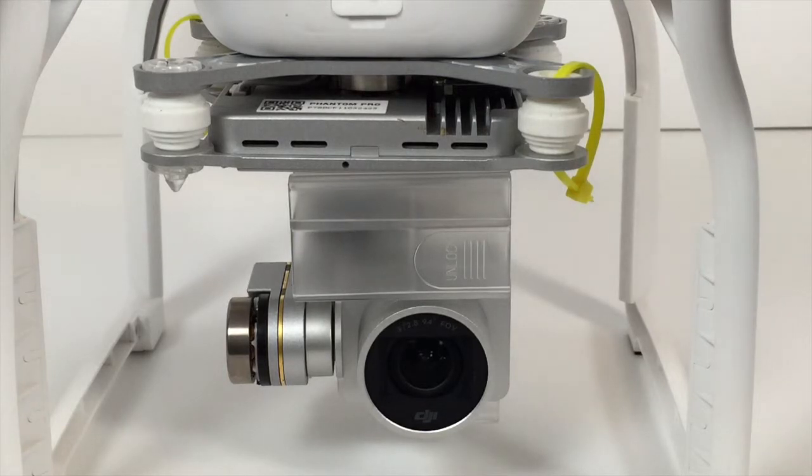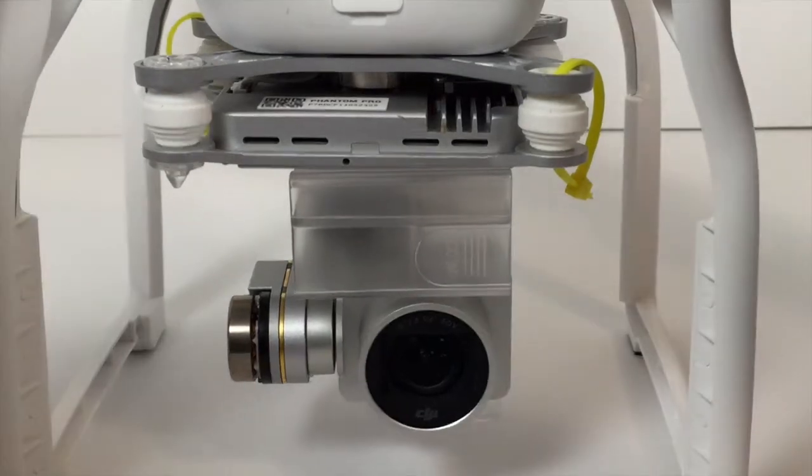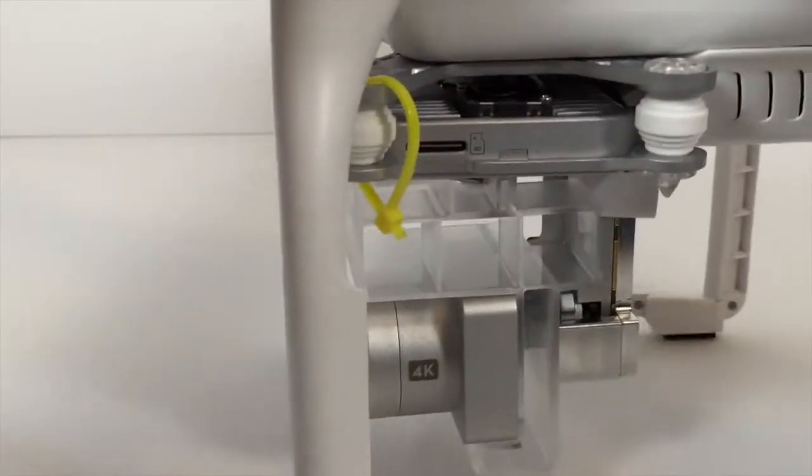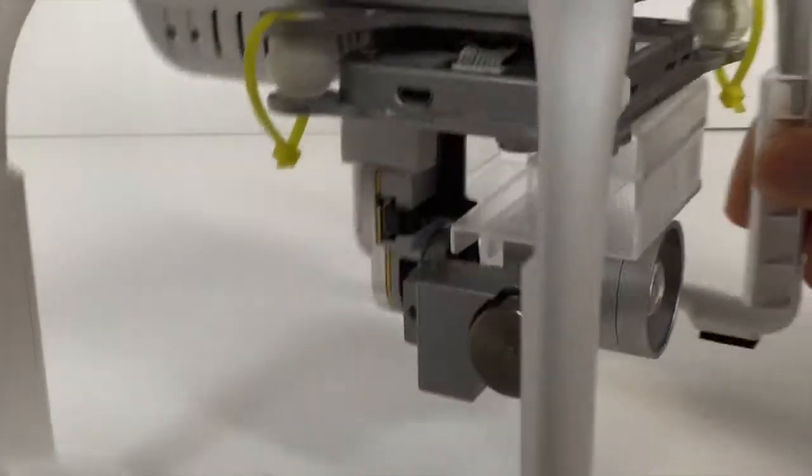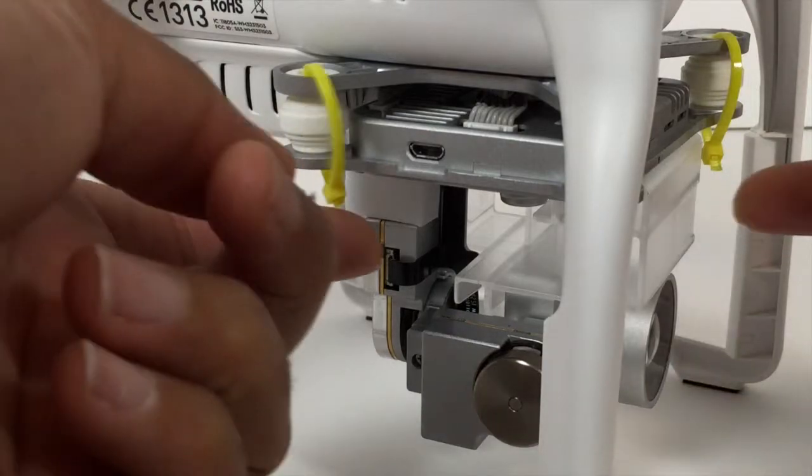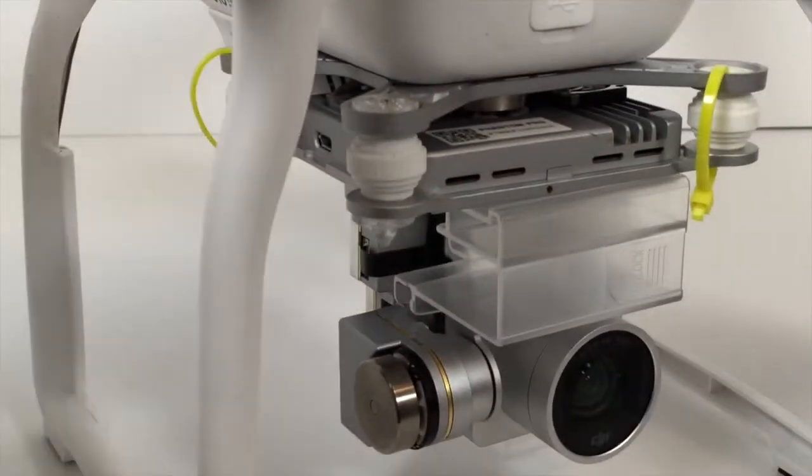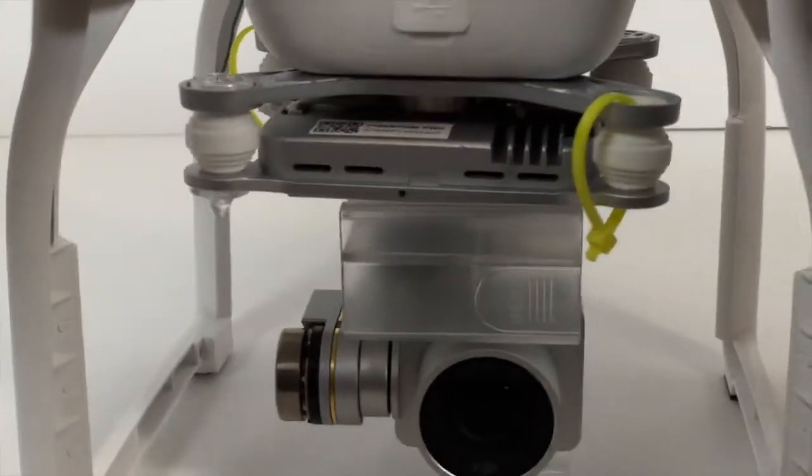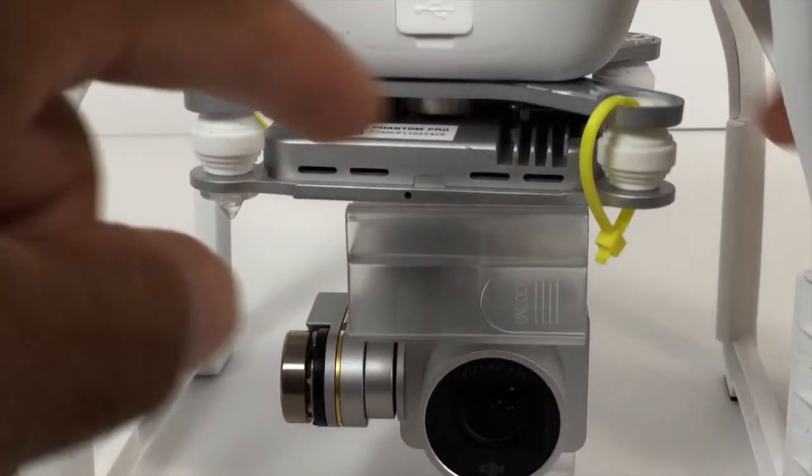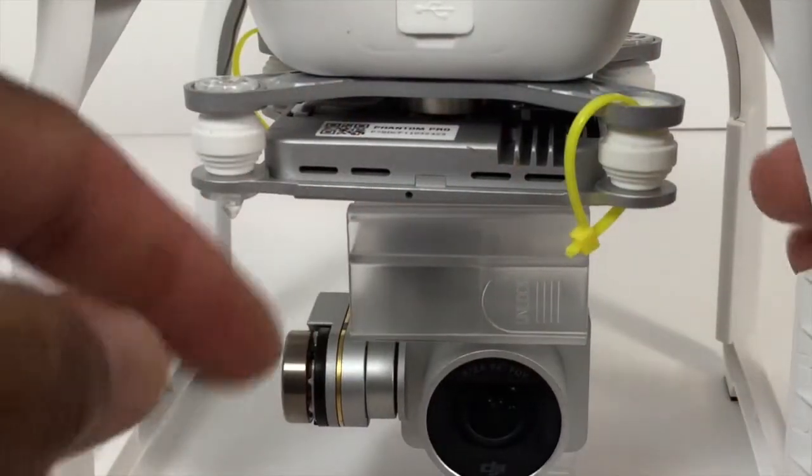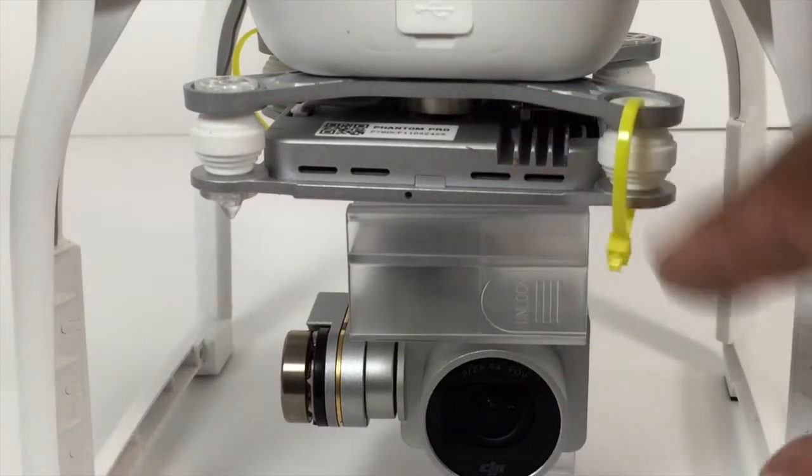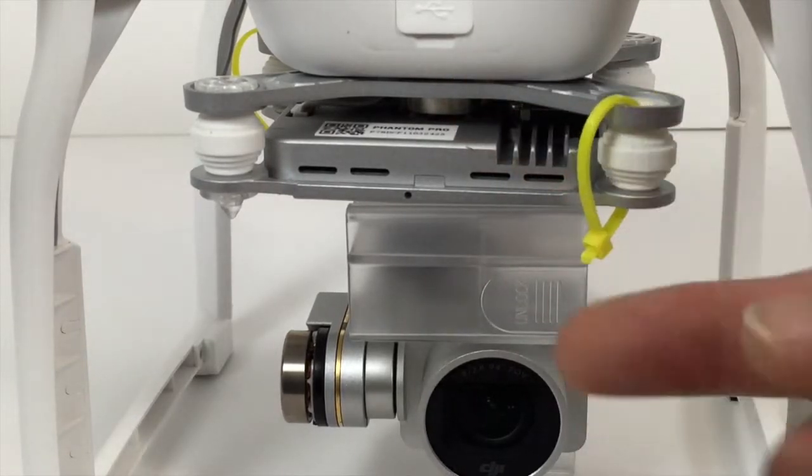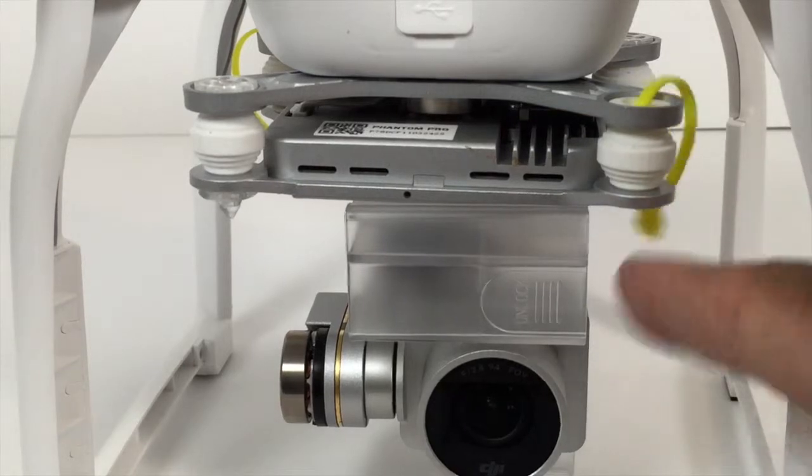Okay, basically this is the clamp that comes attached with the package when you first buy the Phantom. You can see these zip ties - you don't have to do those. This is something that I decided to do in case I have a hard landing or hit a tree or something like that and the pins break. At least I have a second level of protection so the camera is not going to be hanging in case of crashing. You don't have to do this. This basically doesn't add any weight to it, it's loose, it's not tight at all. You still have that movement.